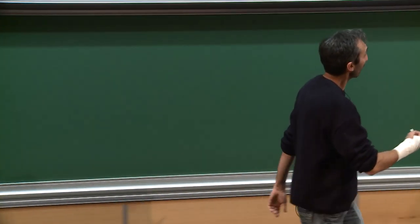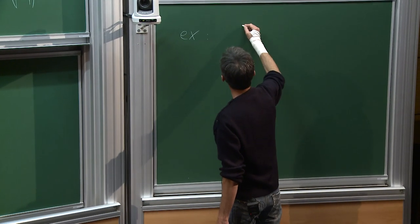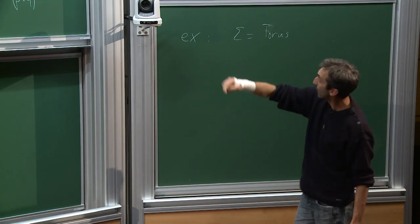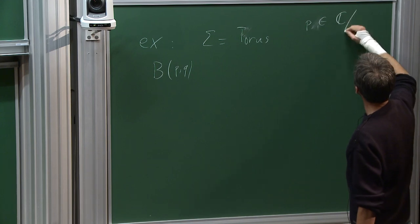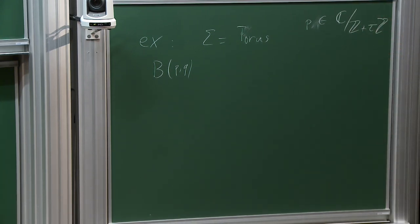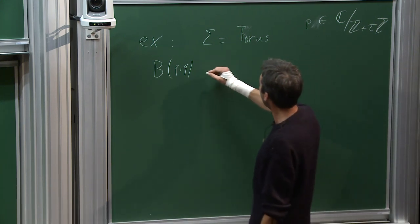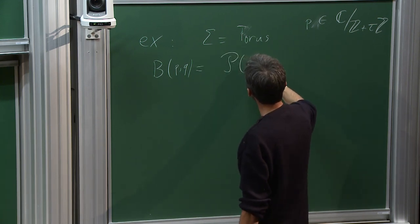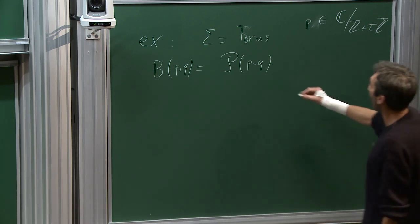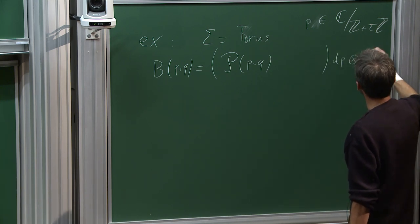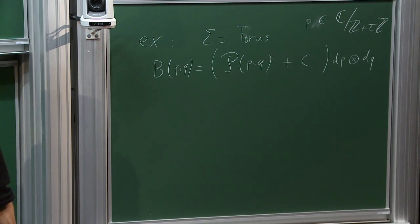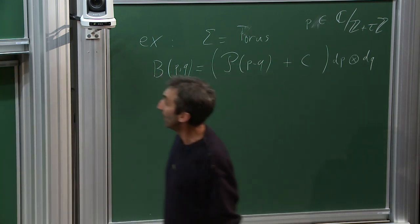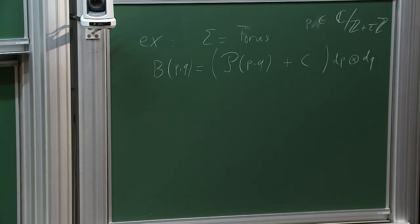As an example, when Sigma is a torus — say C quotiented by Z plus tau·Z — there is a natural candidate for B: the Weierstrass P-function of P minus Q, which has a double pole as P equals Q, times dP·dQ. You can add an arbitrary constant, and this is essentially all you can do on a compact Riemann surface. The choice of constant is nearly equivalent to a choice of marking of cycles.